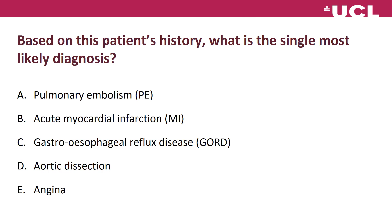First question: based on the patient's history, what is the single most likely diagnosis? A) pulmonary embolism, B) acute myocardial infarction, C) gastroesophageal reflux disease, D) aortic dissection, E) angina. Pause here until you have an answer.